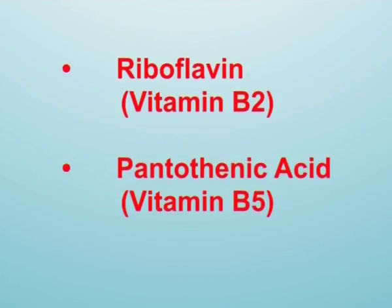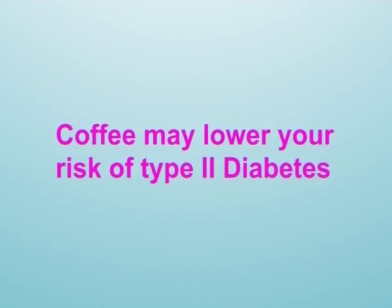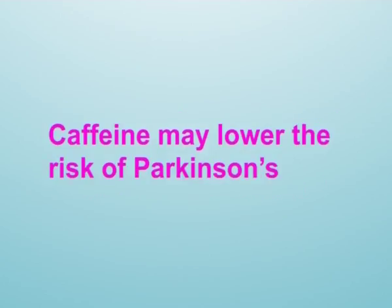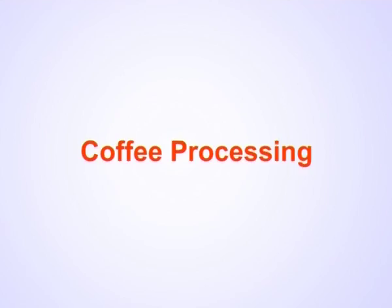There are essential nutrients in coffee, including riboflavin (vitamin B2), pantothenic acid (vitamin B5), manganese, potassium, magnesium, and niacin (B3). Coffee may lower the risk of type 2 diabetes, protect against Alzheimer's disease and dementia, and caffeine may lower the risk of Parkinson's. Coffee can also fight depression and make you happier. Now let us look at coffee processing.